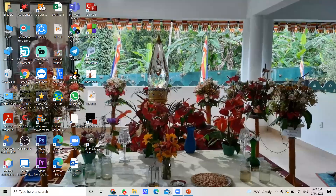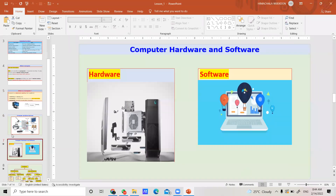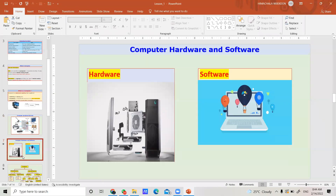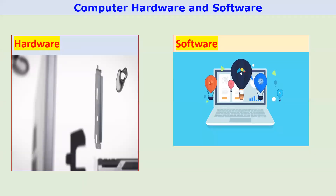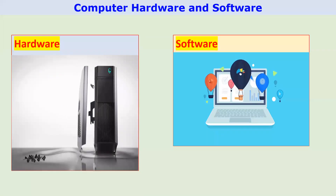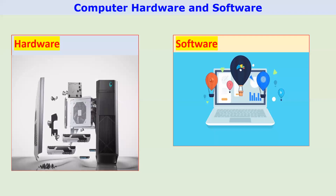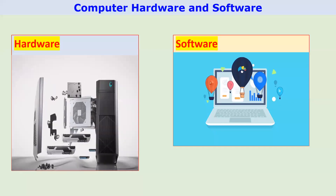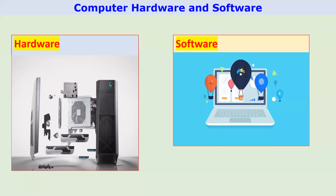We should identify another two terms. Earlier we identified what is a computer and some devices. Now we are categorizing these devices according to their usage. Before that, you want to understand the terms computer hardware and software. Can someone tell me the difference between these two by looking at the diagrams? One student said: 'We can touch hardware.' Correct — in the hardware side, you can see all tangible devices, meaning you can touch them.